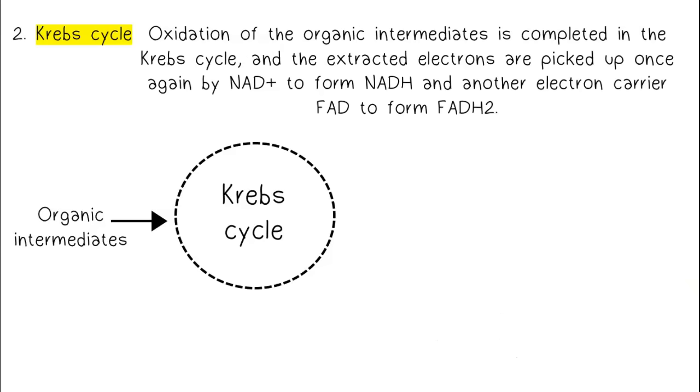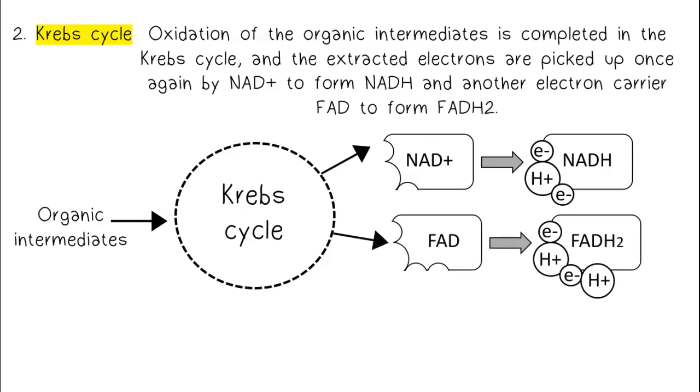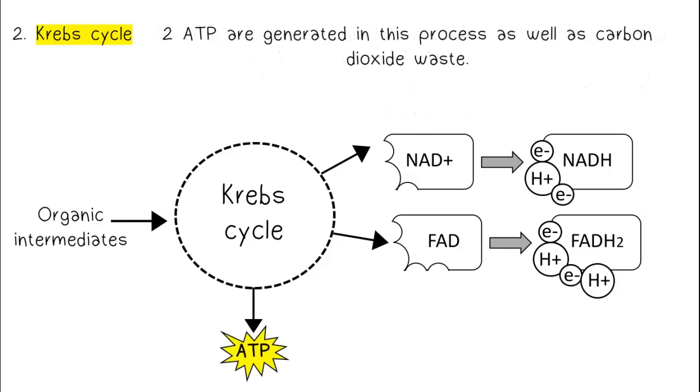Oxidation of the organic intermediates is completed in the Krebs cycle, and the extracted electrons are picked up once again by NAD+ to form NADH, and another electron carrier, FAD, to form FADH2. Two ATP are generated in this process, as well as carbon dioxide waste.